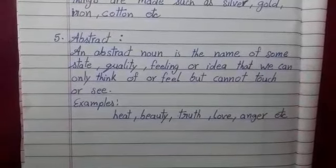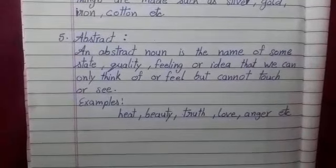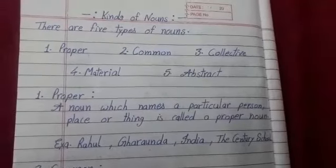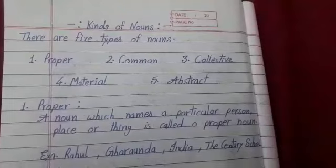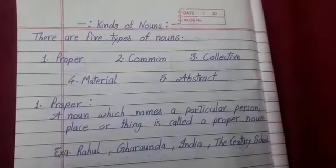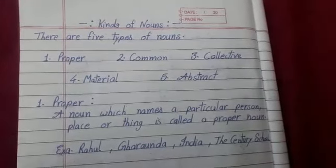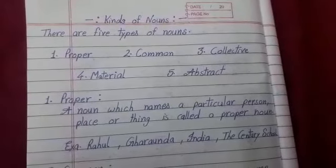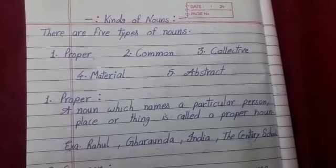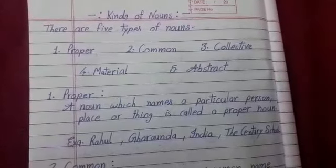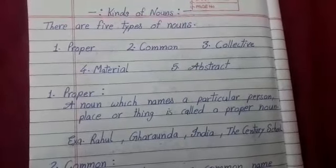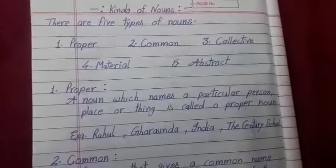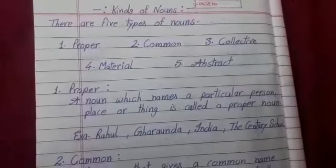Let's take a quick revision. The first type was proper noun, second was common, third was collective, fourth was material, and fifth was abstract noun. Proper means the name of a particular thing; common means the name of a general thing; collective means the name of a group; material means the name of a metal or substance; and abstract means the name of a state, feeling, idea, or quality. These are the five types of nouns.